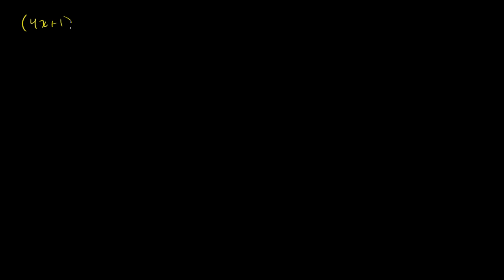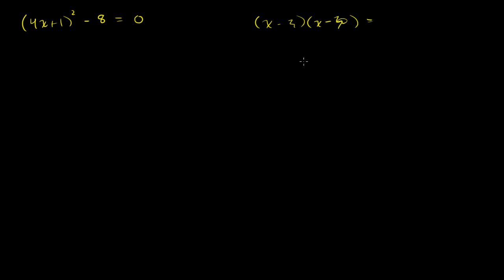So let's say I have 4x plus 1 squared minus 8 is equal to 0. Now based on everything we've done so far, you might be tempted to multiply this out, then subtract 8 from the constant you get, and then try to factor it. Then you'd get x minus something times x minus something else is equal to 0, and you'd say one of these must be equal to 0. We're not going to do that this time, because you might see something interesting here. We can solve this without factoring it.